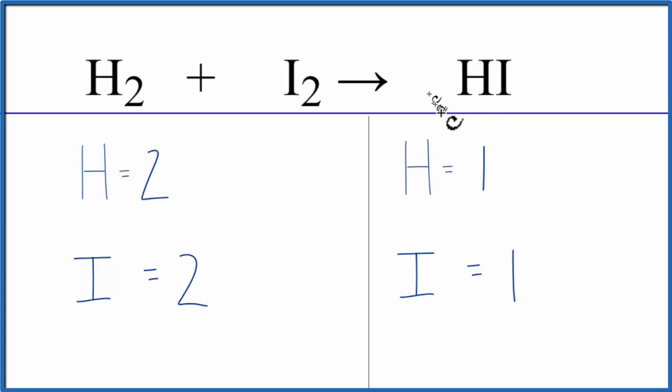When we're balancing equations, we can change the numbers in front. They're called the coefficients. What we can't change are the subscripts. So we can't change these little numbers here after each element.